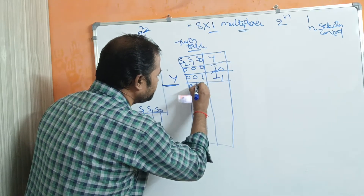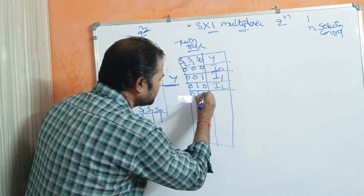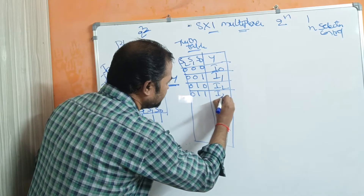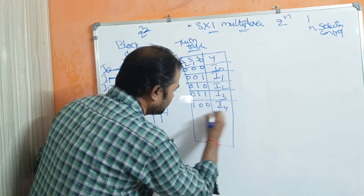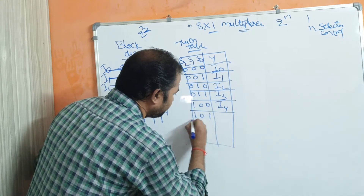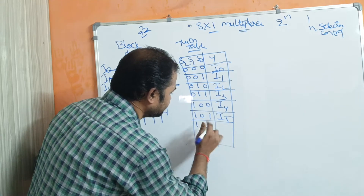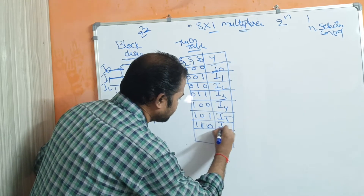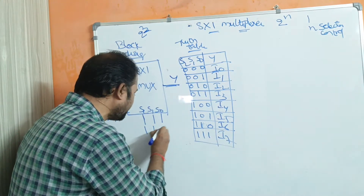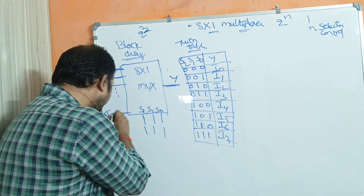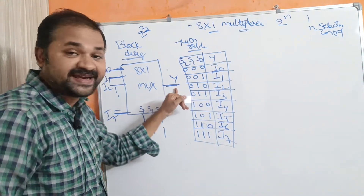If the selection inputs are 0, 1, 0 then i2 will be displayed as the output. If 0, 1, 1 then i3 will be displayed as the output. Next i4, then i5, then i6, then i7. So if the selection inputs are 1, 1, 1 then the last data input line i7 will be displayed as the output.